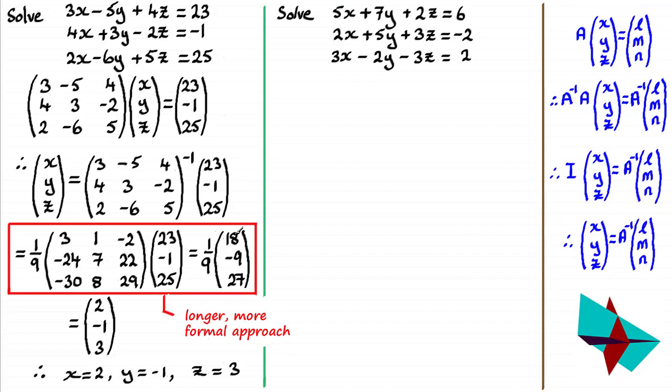And if you do 1/9 of 18, -9, and 27, you'll end up with x, y, and z. So a much longer method. So the calculator is preferred if you've got that option.